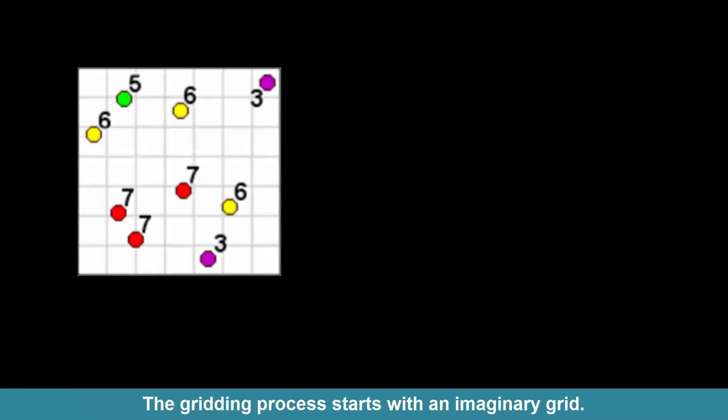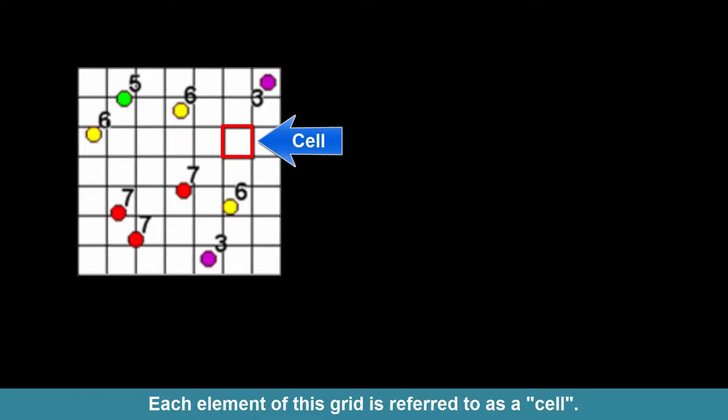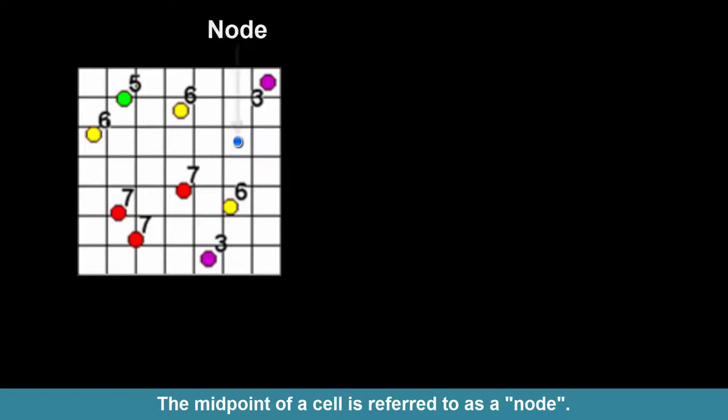The gridding process starts with an imaginary grid. Each element of this grid is referred to as a cell. The midpoint of a cell is referred to as a node.